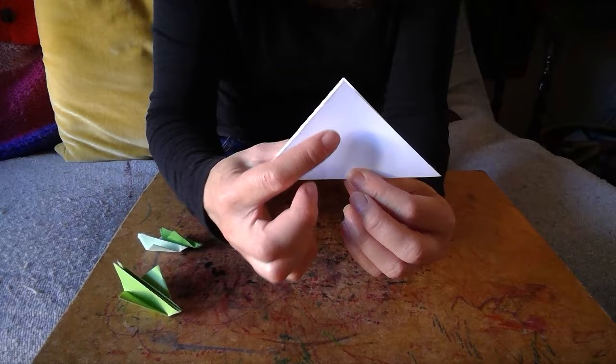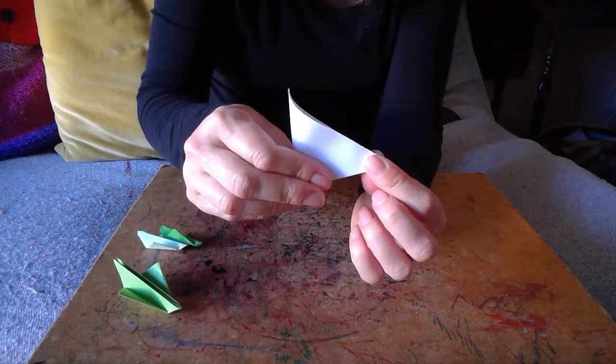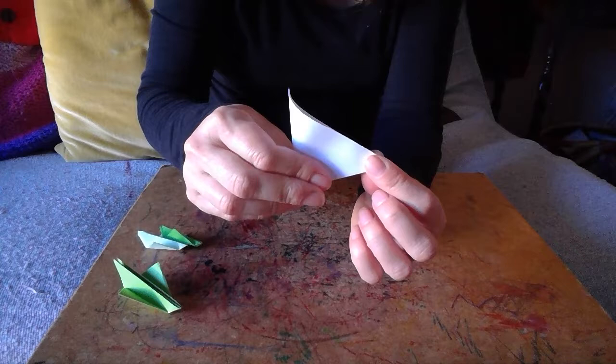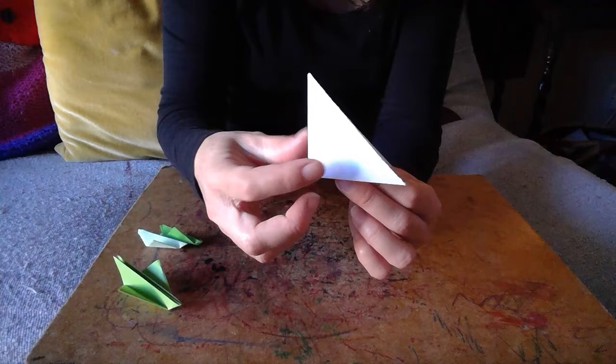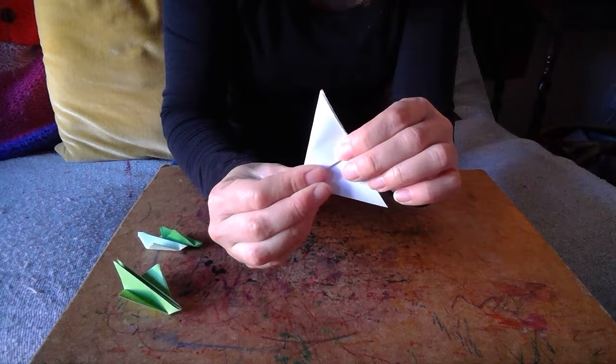So our next fold is to close it in half again. I'm going to take this corner and meet the other corner. So here goes. Nice and simple. Corner to corner. Good strong fold. Now the loose corner I want you to bring up to the top. So again it's corner to corner. Taking this and bringing it up like so. We're almost there. It's that simple.